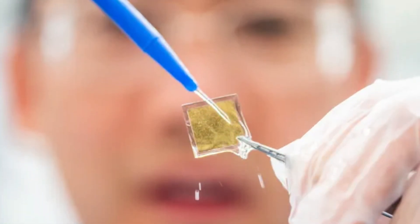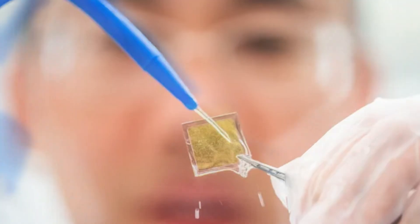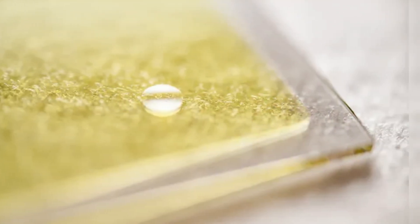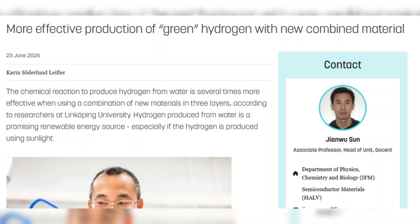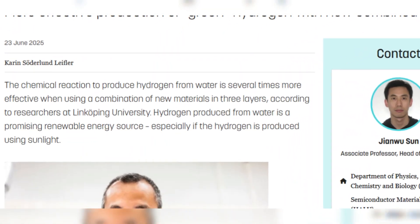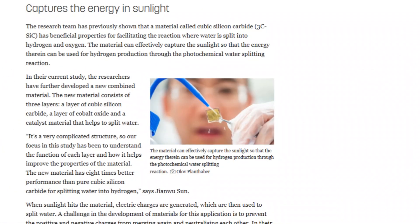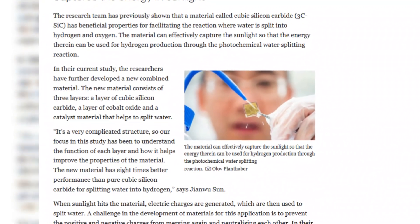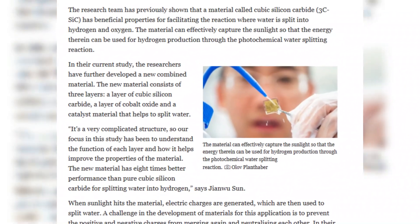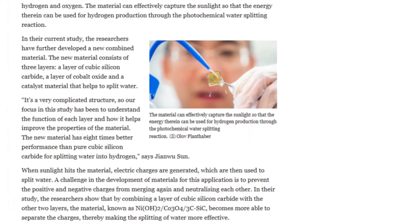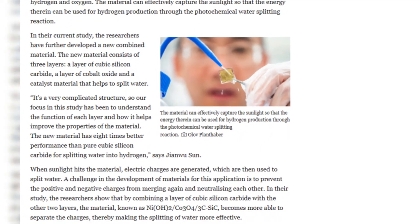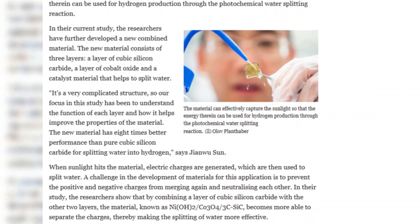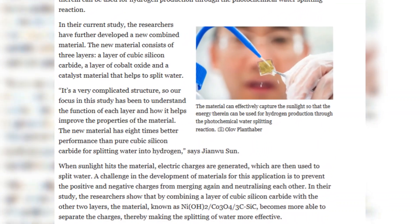At the base is cubic silicon carbide, a semiconductor that absorbs sunlight efficiently and enables the formation of electron-hole pairs. It replaces the titanium dioxide used by the Japanese team. But the real innovation is in the two additional layers, cobalt oxide and nickel hydroxide. These materials guide the electrons and holes in opposite directions, keeping them spatially separated. This prevents recombination and allows water-splitting to proceed efficiently.